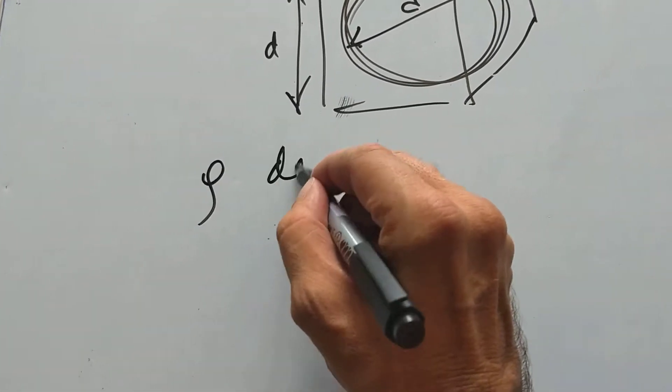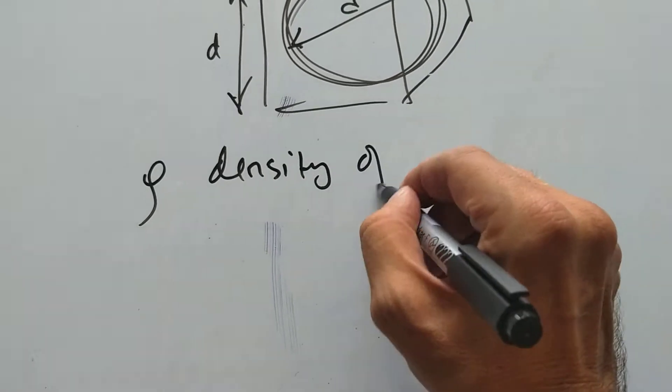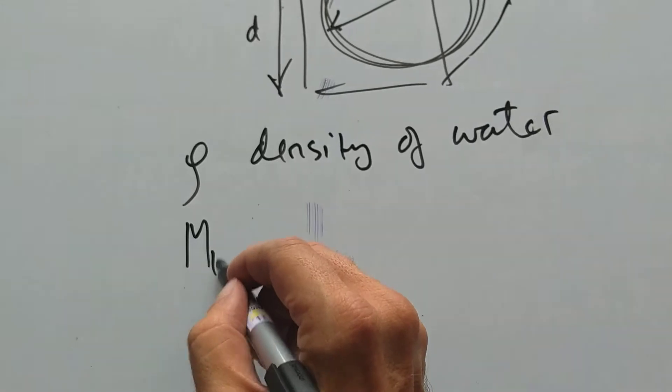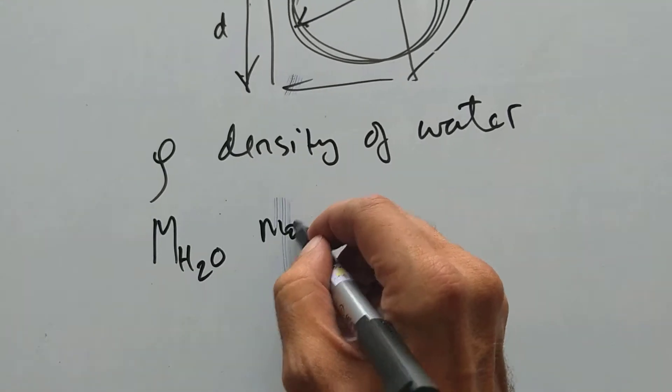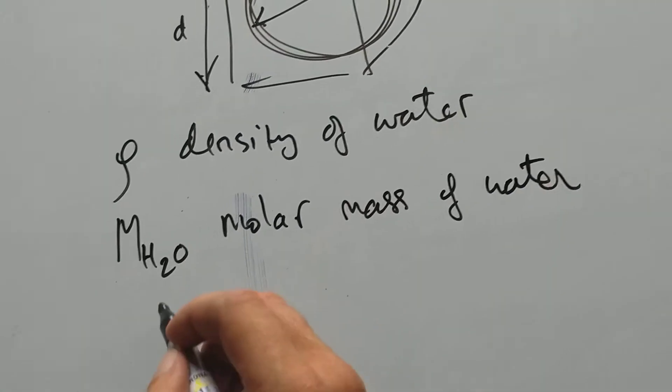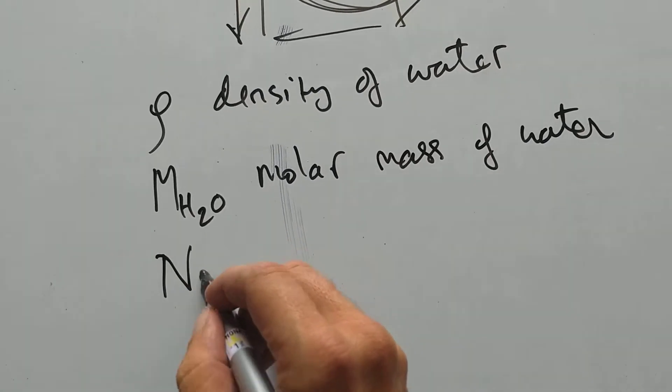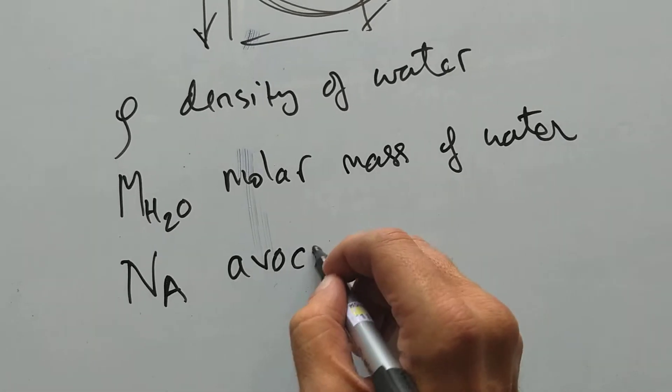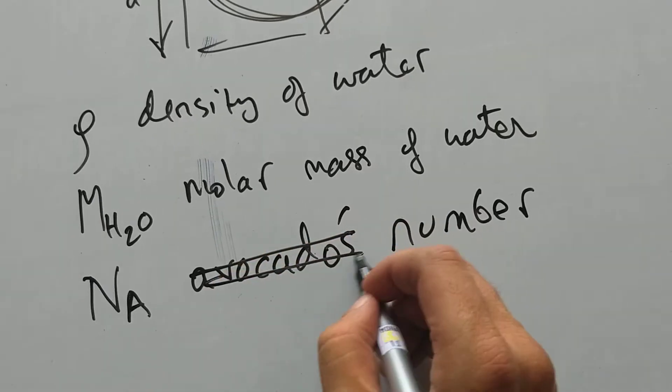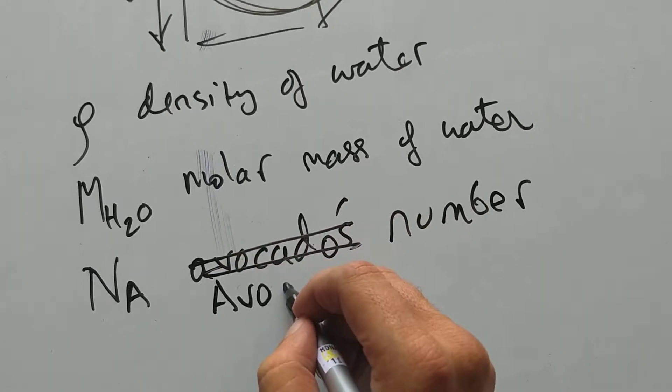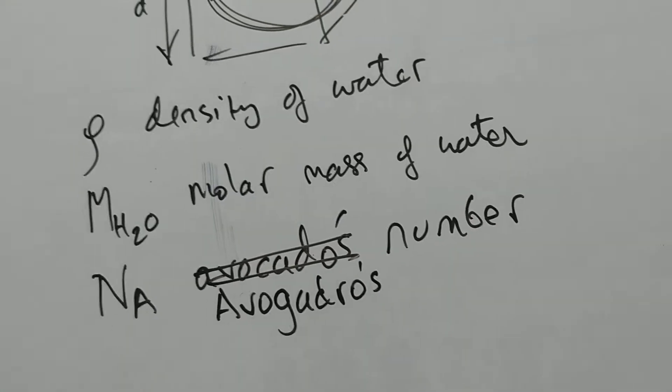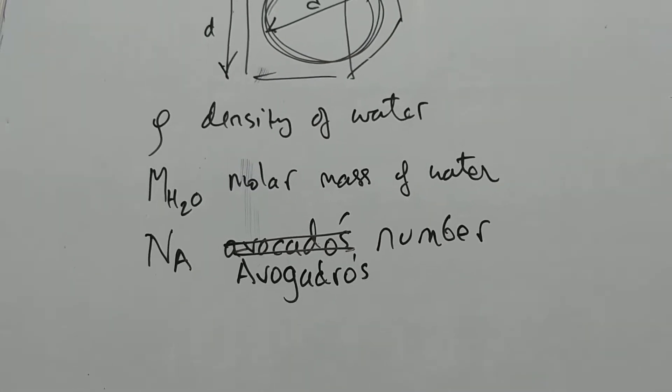The data we're going to need is rho, the density of water. Then we need MH2O, which is the molar mass of water. And we're going to need Avogadro's number.